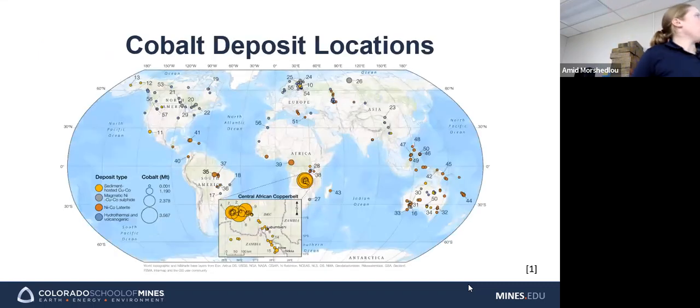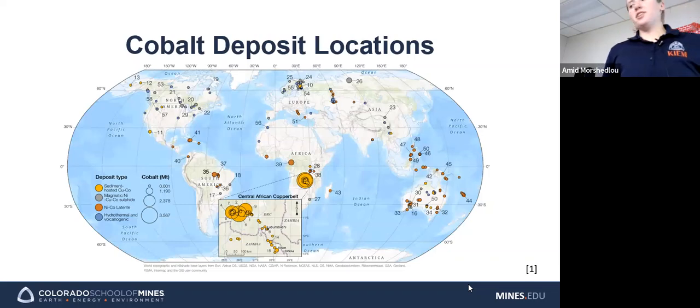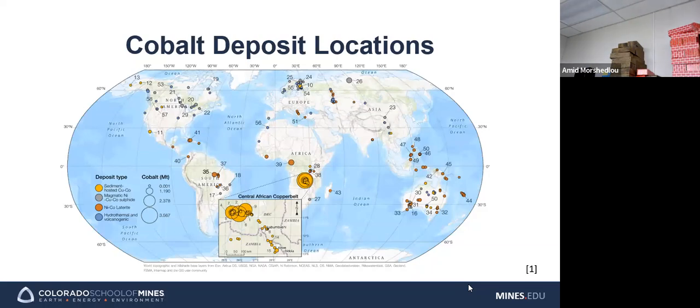So this is a map of some cobalt deposits in the world. As you can see, there's a very high concentration of that in Africa, and there's also quite a bit of it in Australia. The singular primary cobalt mine is this one, and then today I'll be talking about the Idaho cobalt belt, which is right up here.